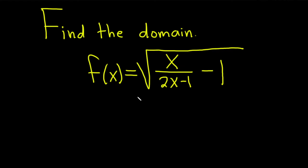In this problem, we are going to find the domain of this function. We have f of x equal to the square root of all of this: x over 2x minus 1, minus 1.